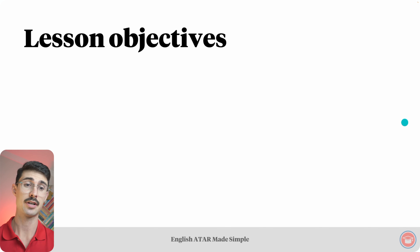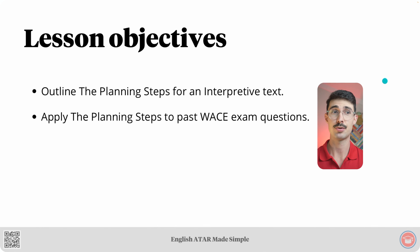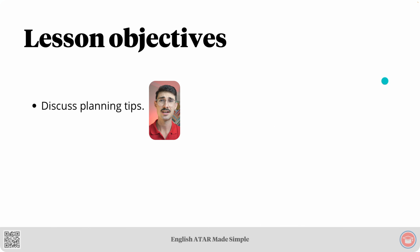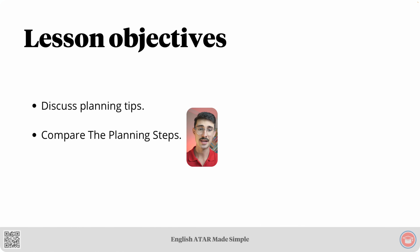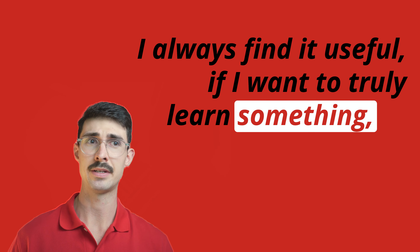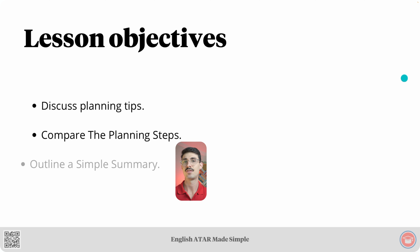So on that note, let's take a look at lesson objectives. Firstly, we will outline the planning steps for an interpretive text. After that, we'll apply those steps to a couple of past WACE exam questions by analysing example 1 and example 2. From there, we shall discuss some planning tips, then compare all the planning steps that we've learnt. I always find it useful to compare and contrast things to truly learn them. Finally, we will call it a day by outlining a simple summary.